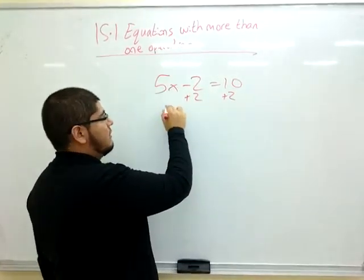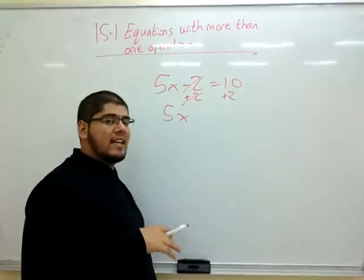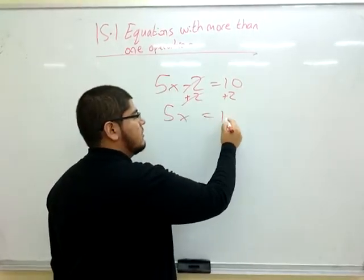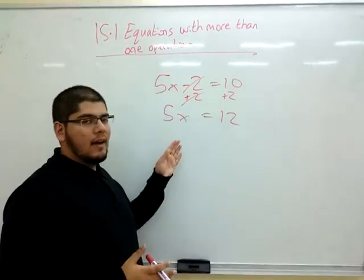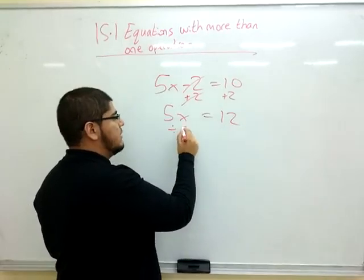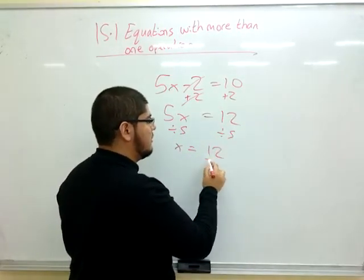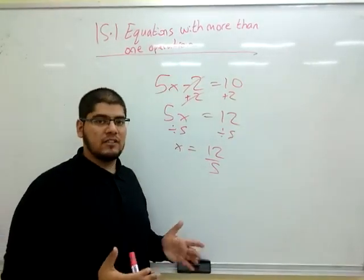So now I'm left with 5x, they cancel each other, because negative 2 plus 2 is 0, then 10 plus 2 equals 12. Now I can do the final step of undoing the multiplication with division, divide by 5 on both sides, so x equals 12 divided by 5. And right now I'm just going to leave it as a fraction.